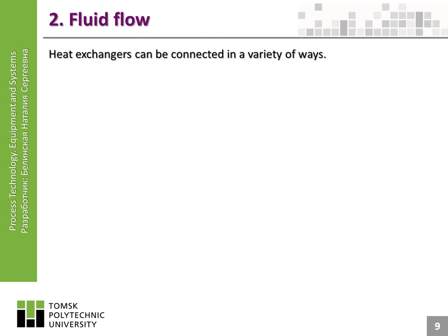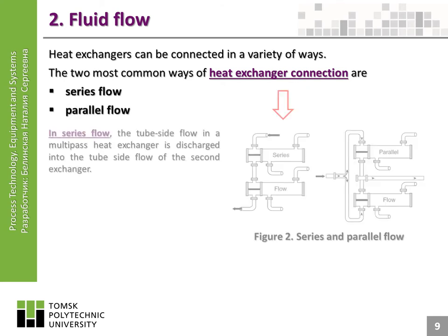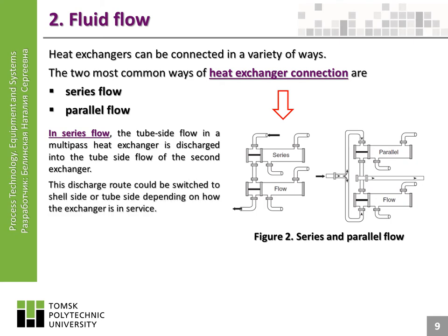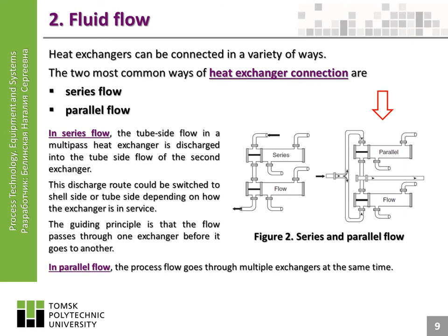Heat exchangers can be connected in a variety of ways. The two most common ways of heat exchanger connection are series flow and parallel flow. In series flow, the tube-side flow in a multipass heat exchanger is discharged into the tube-side flow of the second exchanger. The guiding principle is that the flow passes through one exchanger before it goes to another. In parallel flow, the process flow goes through multiple exchangers at the same time.